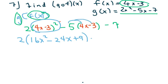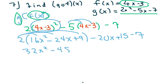Distribute here, you get negative 20x plus 15. Don't forget about Mr. Tagalong 7 here. I'm going to go ahead and distribute the 2 now. So I get 32x squared minus 48x plus 18. And then just copy down the rest of this. 15 minus 7 is 8.